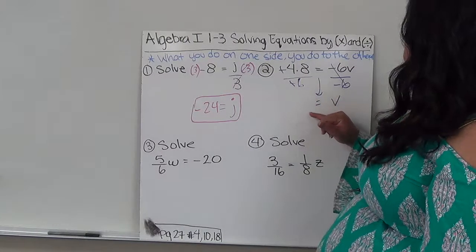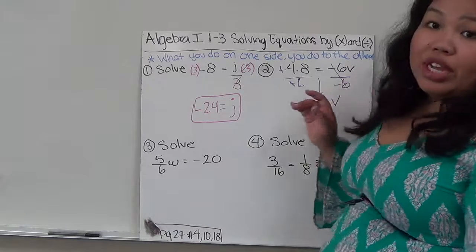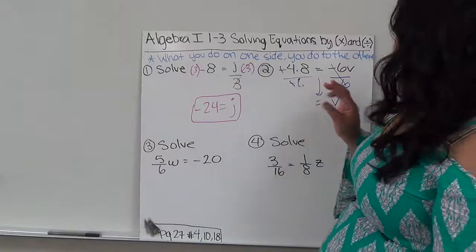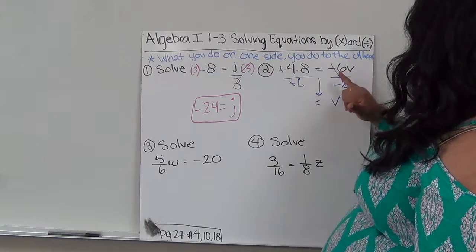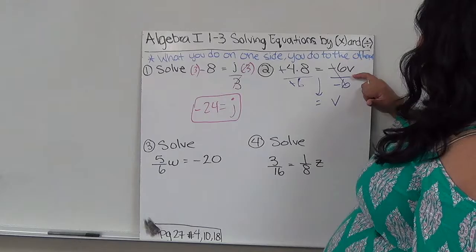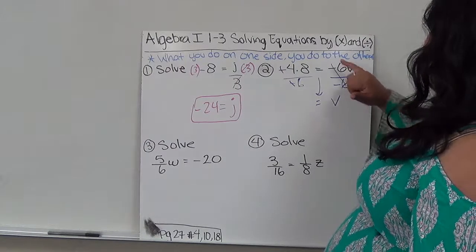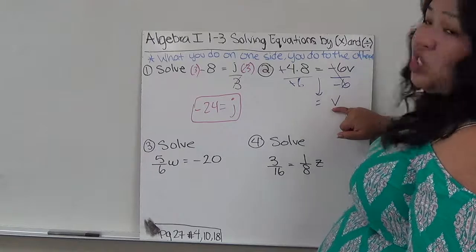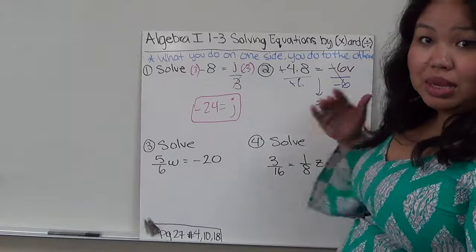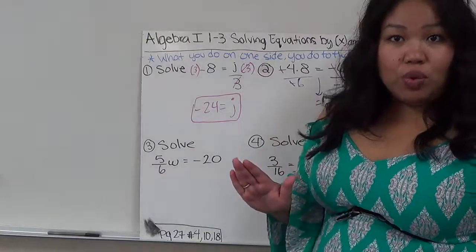So one more time, how we got to this so far is that I'm trying to isolate V. And so in order to do it, I have to get rid of it, I have to do the opposite. So this is being multiplied by negative 6. I have to divide by negative 6 to get rid of it. Because negative 6 over negative 6 gives us 1, which leaves me with just V. Because the same number, top and bottom, gives me just 1.